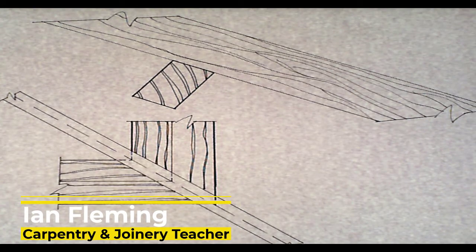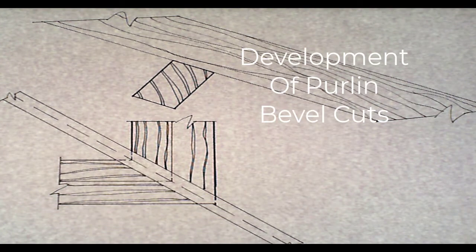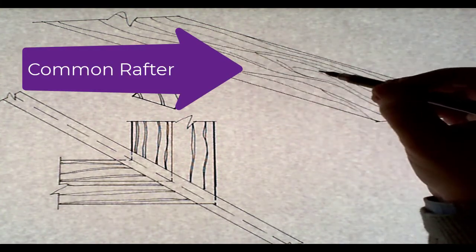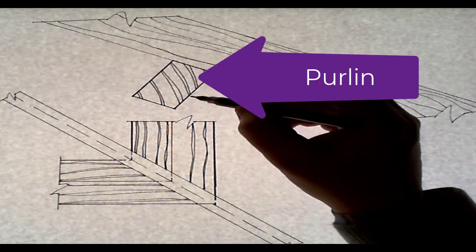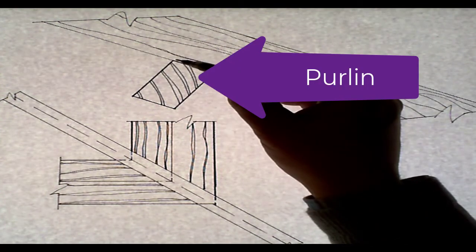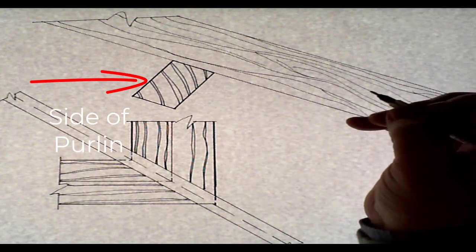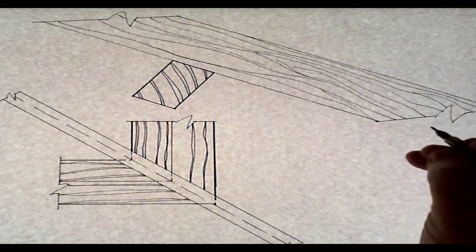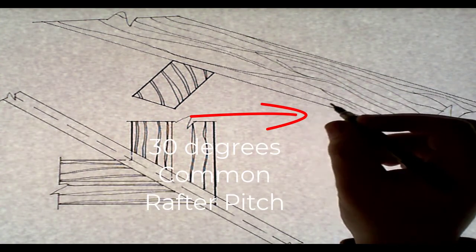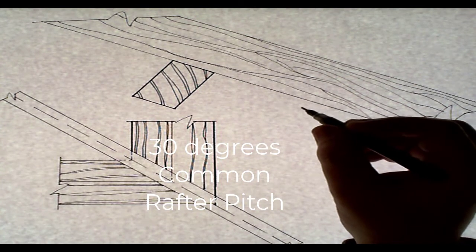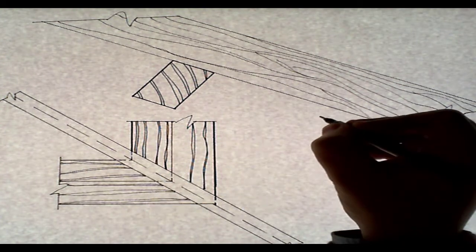For this drawing video we're going to look at the development of purlin bevels. From the drawing here you can see the common rafter, and here is the purlin — the edge of the purlin and the side of the purlin. The angle of inclination for this particular rafter is 30 degrees; the pitch of the common rafter is 30 degrees.